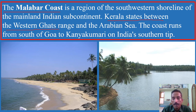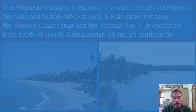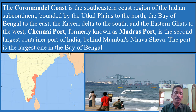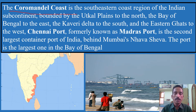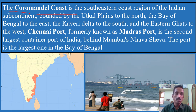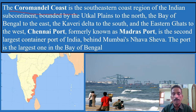South of Kanyakumari is Tamil Nadu. The Coromandel Coast is the southeastern coastal region of the Indian subcontinent, bounded by the Deccan plains to the north, the Bay of Bengal to the east, the Kaveri Delta to the south, and the Eastern Ghats to the west. Chennai port, formerly known as Madras port, is the second largest container port in India after Mumbai's Jawaharlal Nehru Port.